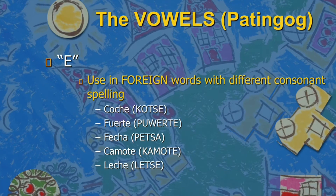And E should be used in foreign words with different consonant spelling. Like coche — we spell it as K-O-T-S-E; the original is C with C-H, but C-H becomes T-S. So in coche you do not change the E — you retain the E when you translate that to Cebuano. Also pecha, fuerte, camote, and leche.